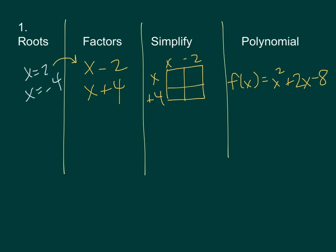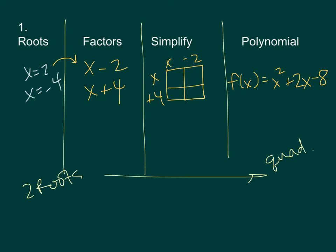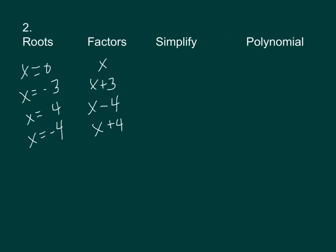And that's your equation — this should make sense. We have two roots and we have a quadratic, which is a second degree polynomial, so that should make sense.